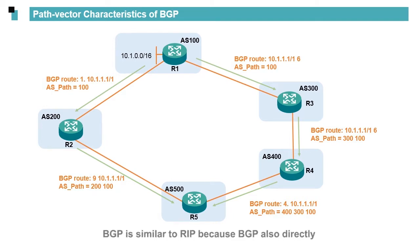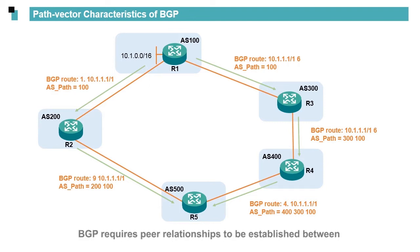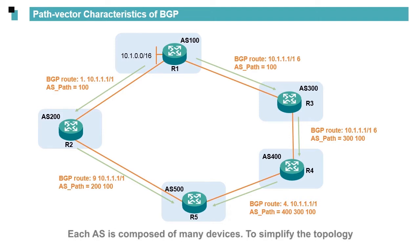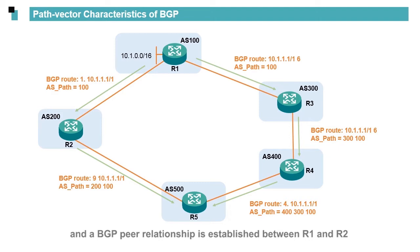BGP has path vector characteristics, and is similar to RIP in that BGP also directly transmits routing information between routers. BGP requires peer relationships to be established between routers to exchange routes. On the network shown in the figure, five ASs form a large network. Each AS is composed of many devices; to simplify the topology, only one router is shown in each AS. BGP runs between the ASs, and a BGP peer relationship is established between R1 and R2 and between R1 and R3.